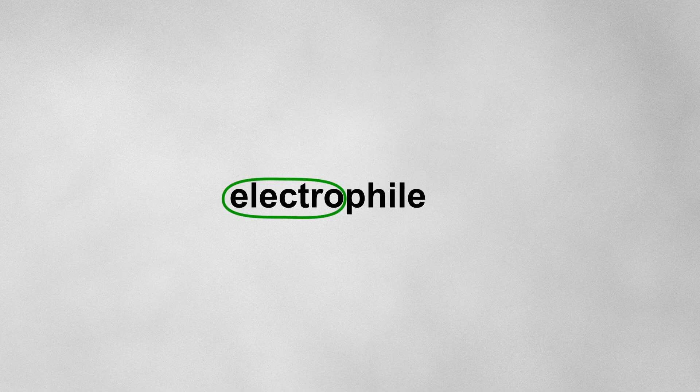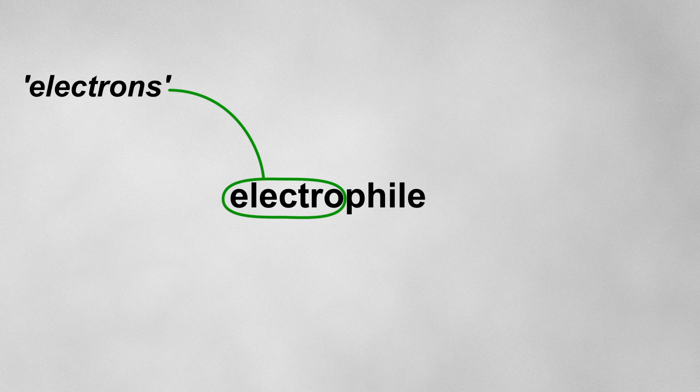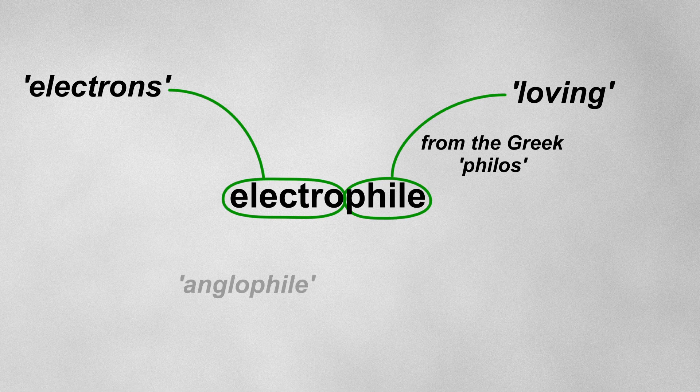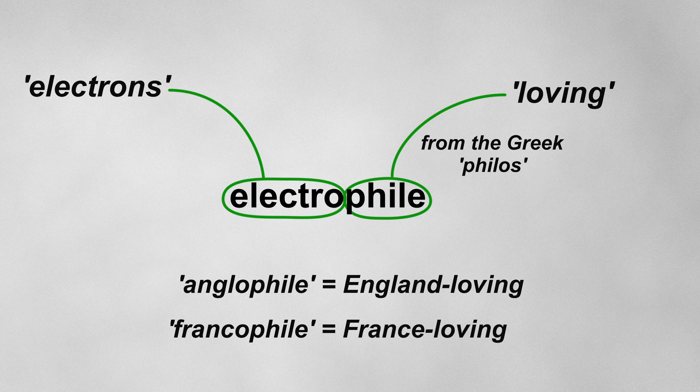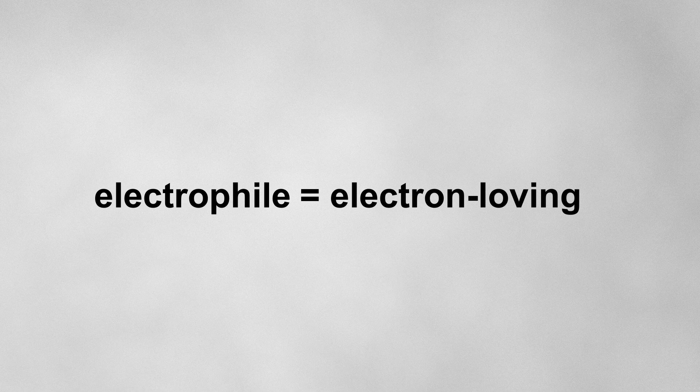Let's break down the word. Electro refers to electrons. Phile comes from the Greek philos, meaning loving, and is used in words like anglophile, meaning England loving, and francophile, meaning France loving. So, in organic chemistry, electrophile essentially means electron loving.